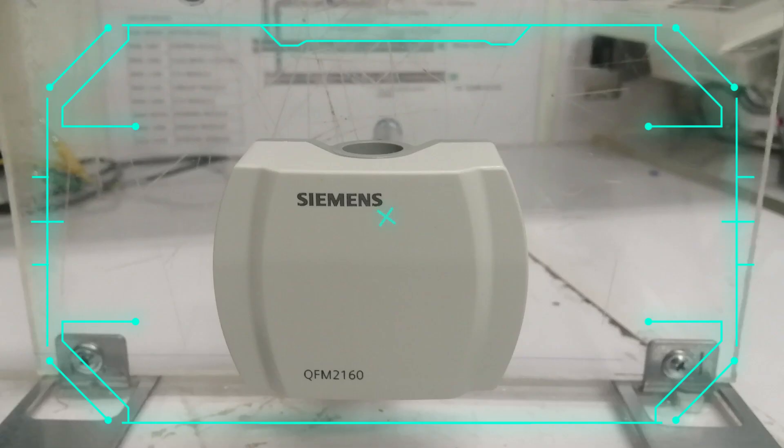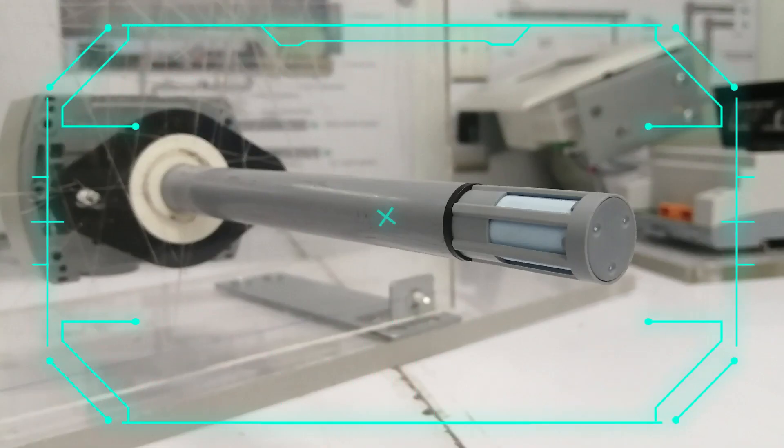Siemens QFM 2160 is used in air ducts of ventilation and air conditioning plants for acquiring the relative humidity and temperature.